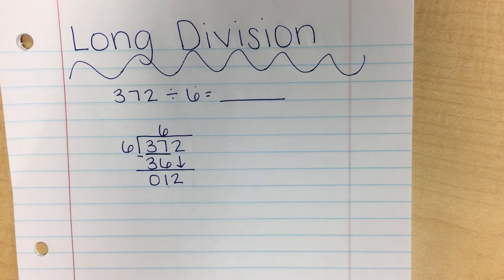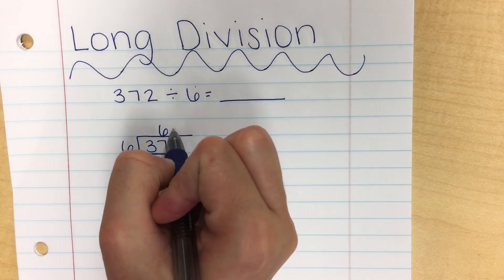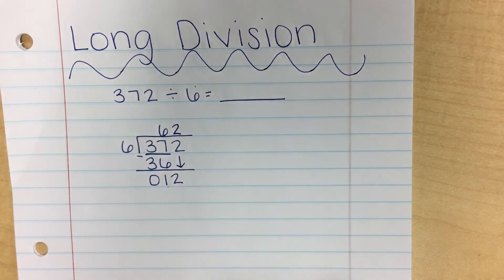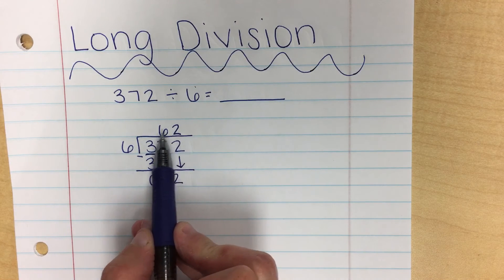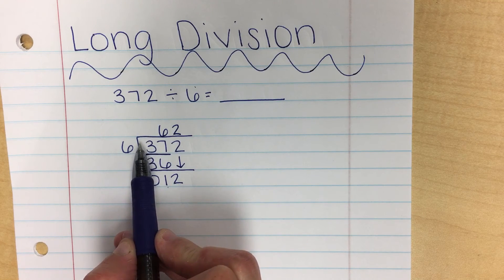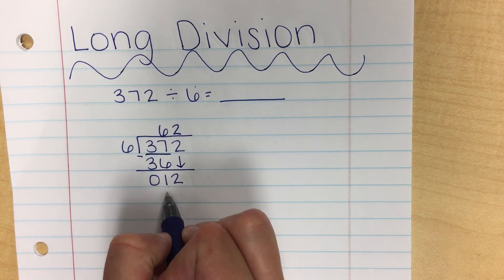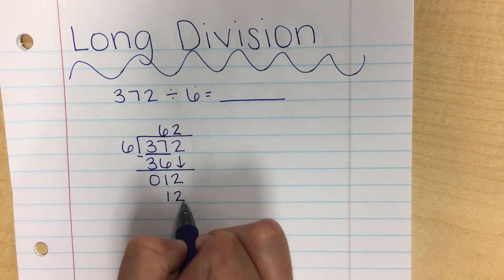If you said 2, you are correct. So I'm going to put 2 at the top. And now the next step is to multiply. That 2 times my divisor, which is 6. 2 times 6 is 12. I'm going to write that at the bottom.